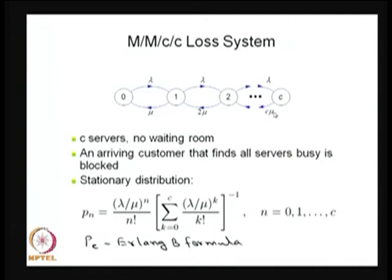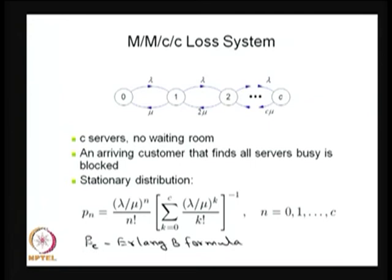The inter-arrival times are exponentially distributed and service by each server is exponentially distributed with parameter mu. Therefore the death rates are mu, 2mu, up to C mu. Since it is a finite capacity model, it is irreducible and positive recurrent, so steady-state and limiting probabilities exist. Using pi Q equals 0 and the normalizing condition, you get the steady-state probabilities pi N. The probability that the system is full — P suffix C — is known as the Erlang B formula, useful for optimizing C to minimize the blocking probability.